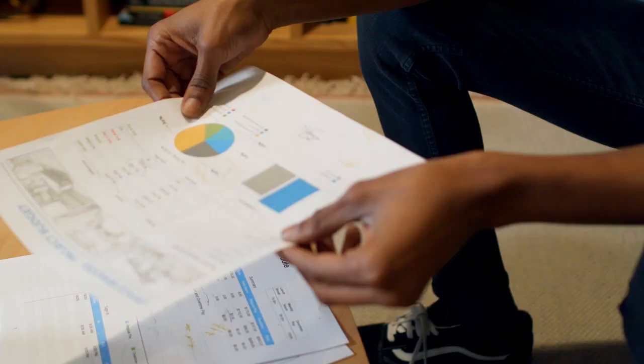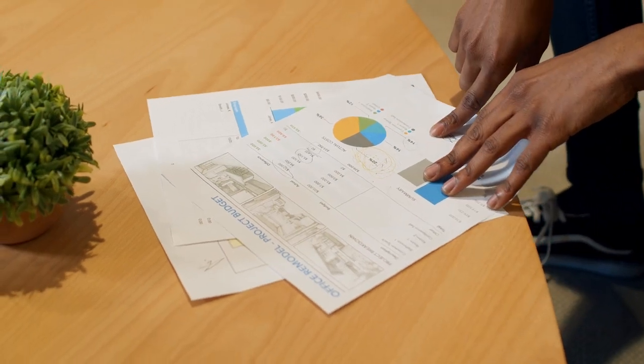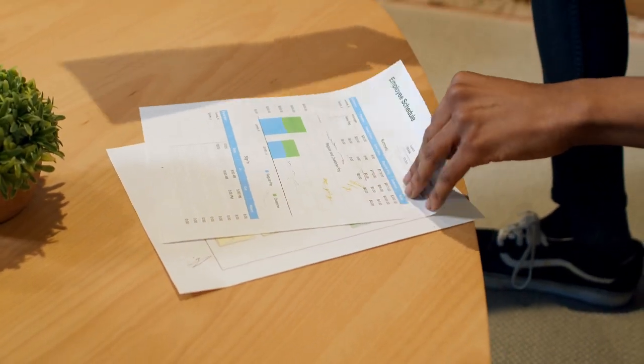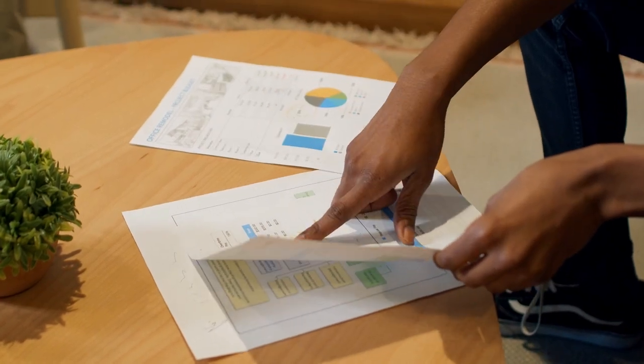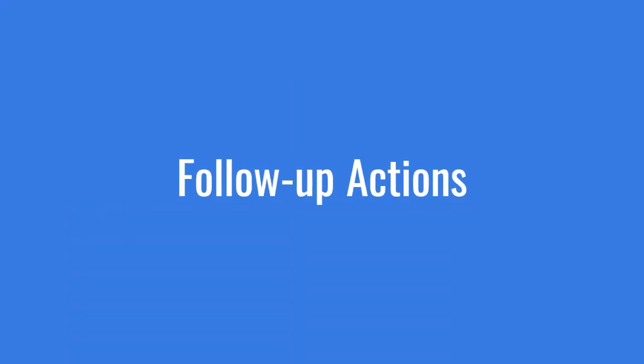The main output of the sprint retrospective is the action items or improvement strategies to be followed in the next sprint. Sprint is a three-to-four week time period in which we plan, develop, and deploy. These action items may be related to the team's process, communication, collaboration, and any aspect that can enhance their effectiveness. The action items identified during the sprint retrospective are incorporated into the upcoming sprint planning session.